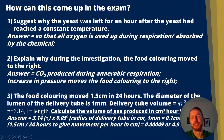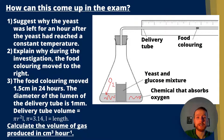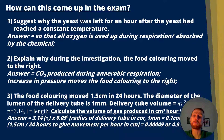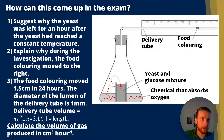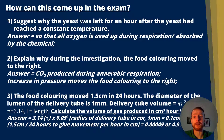Let's go through the answers. Question one: the yeast was left for an hour so that all of the oxygen was absorbed by the chemical, or used up by the yeast in aerobic respiration. Question two: the food colouring moved towards the right because CO2 is produced during anaerobic respiration, increasing the pressure and volume of gas in the system, which causes the pressure to increase and moves the food colouring to the right.